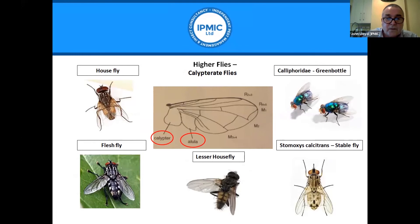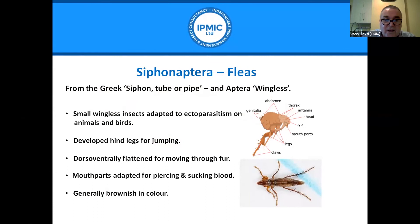Siphonaptera — from the Greek 'siphon' for tube or pipe and 'aptera' for wingless. Fleas are small wingless insects adapted to ectoparasitism on animals and birds. Developed hind legs allow for jumping and their bodies are laterally flattened for moving through fur. Mouthparts are adapted for piercing and sucking blood, and they are generally brownish in color.